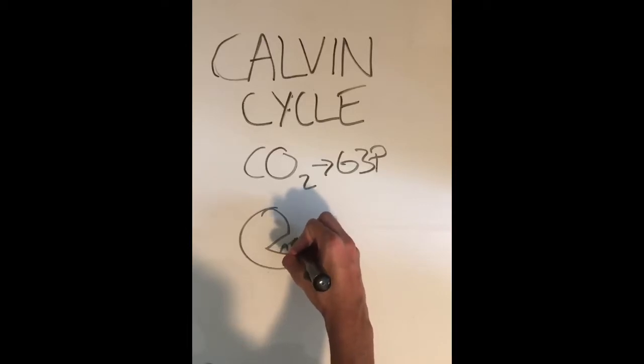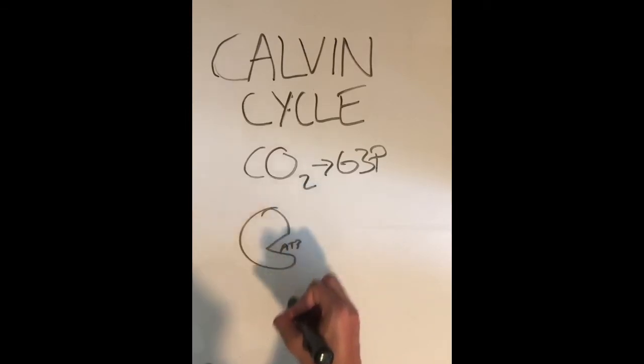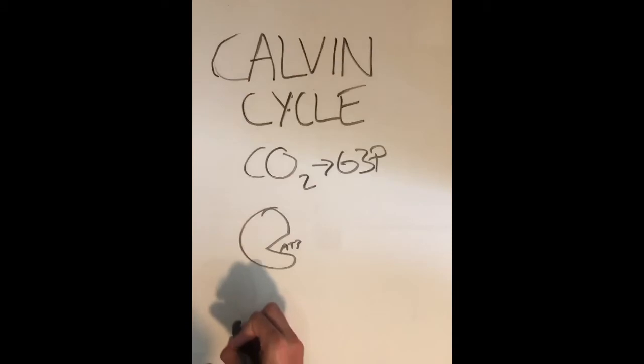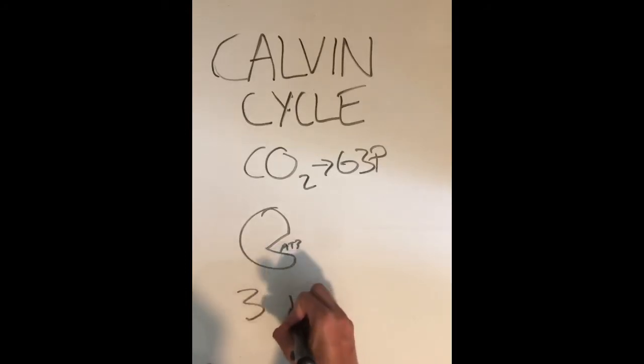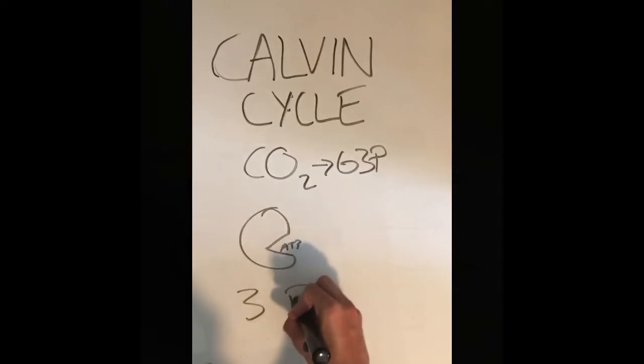In the ribulose biphosphate regeneration phase, the five molecules of G3P are converted into three molecules of ribulose biphosphate by using three molecules of ATP to undergo complex reactions. In total, nine molecules of ATP and six molecules of NADPH are consumed, which can be regenerated by light reaction.